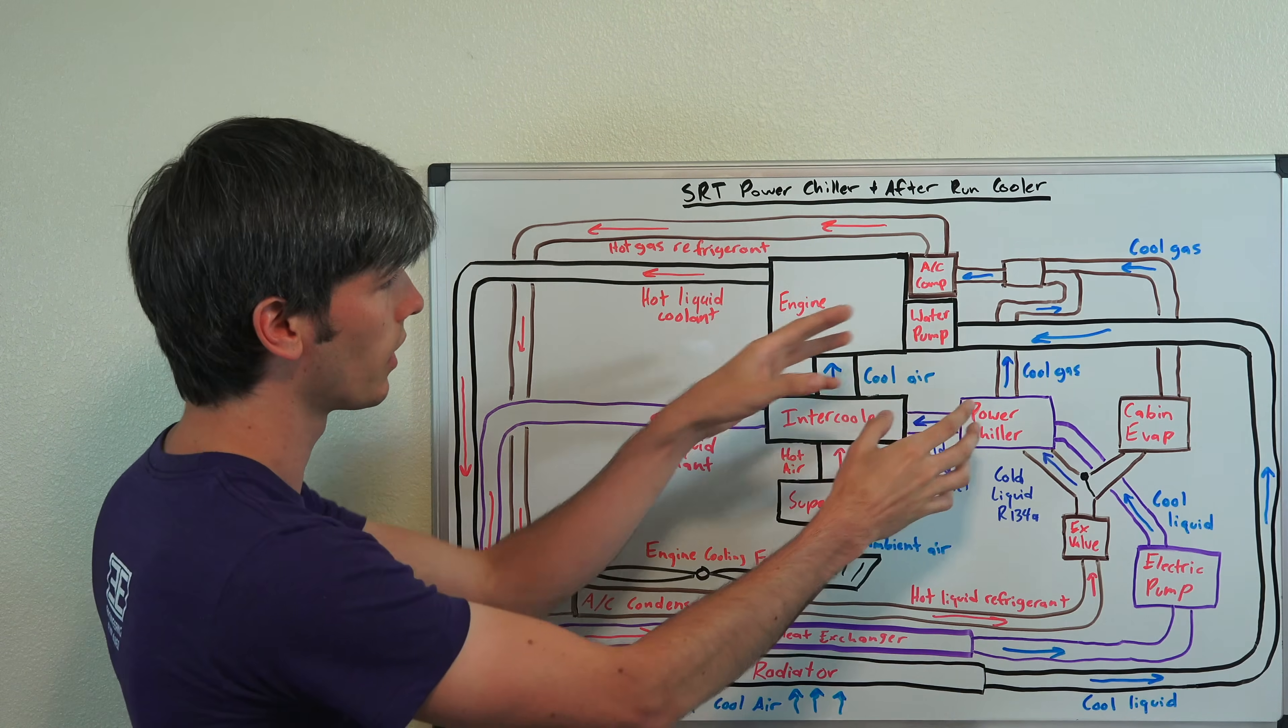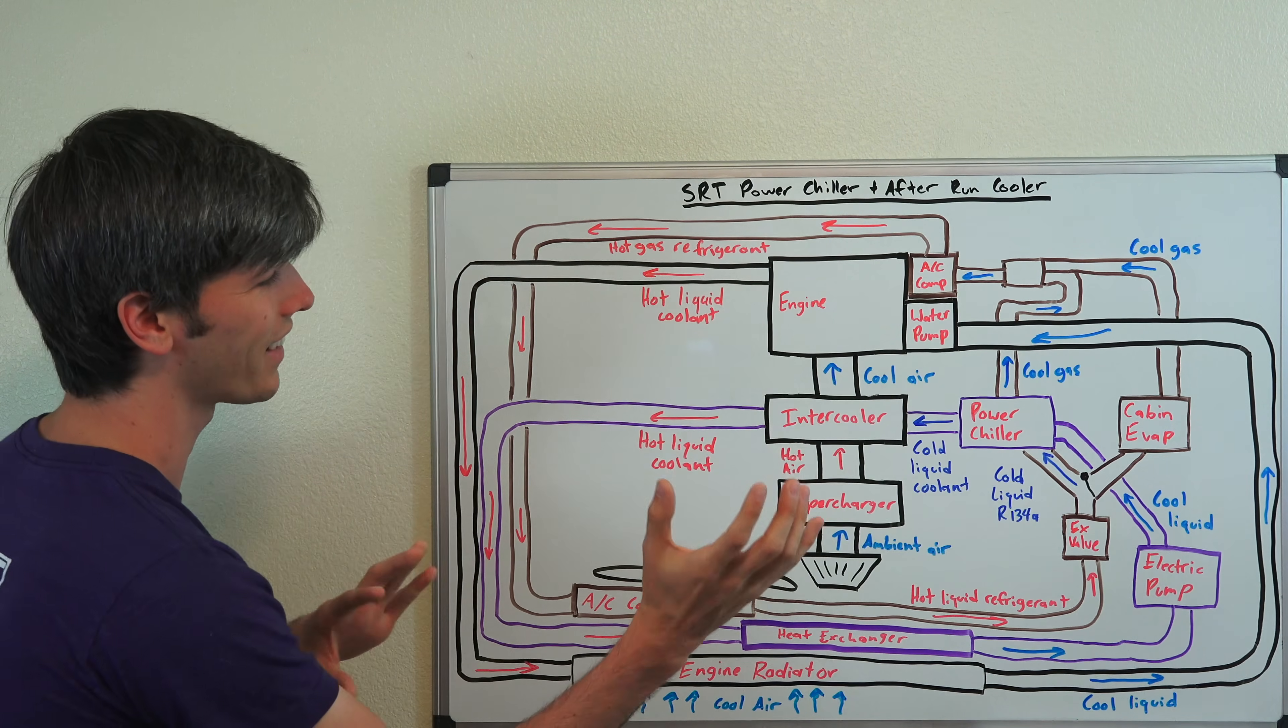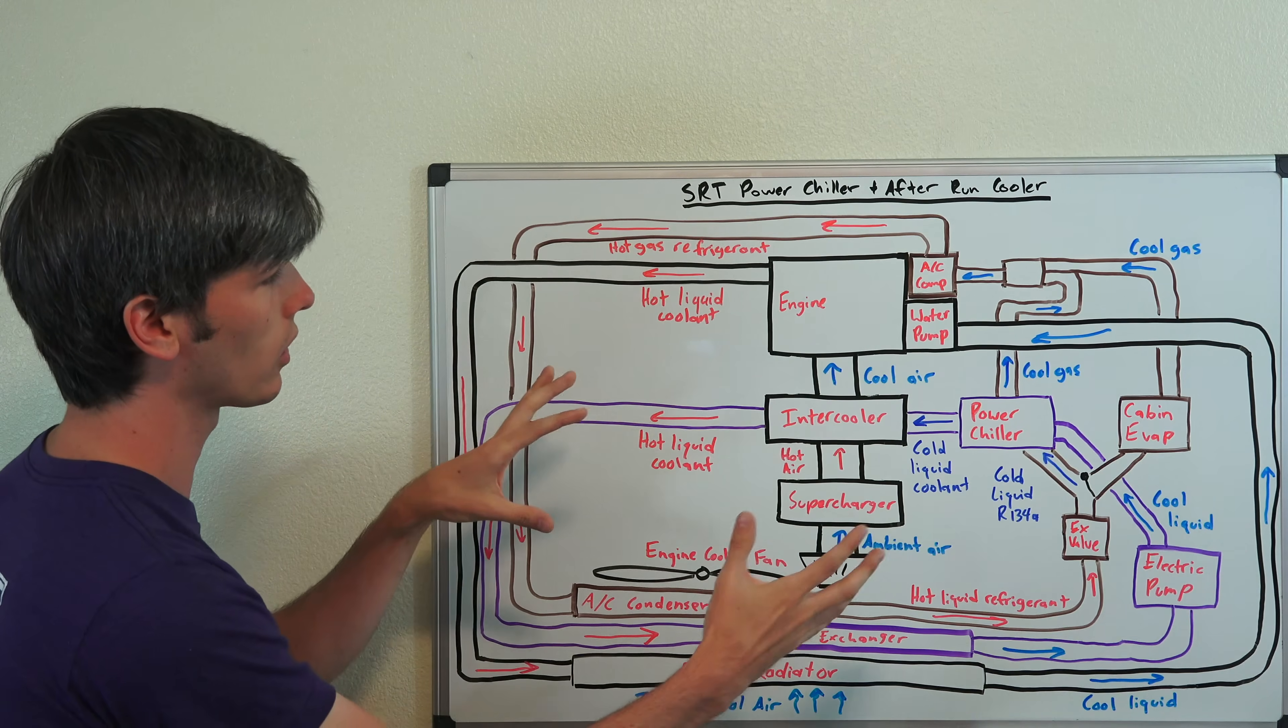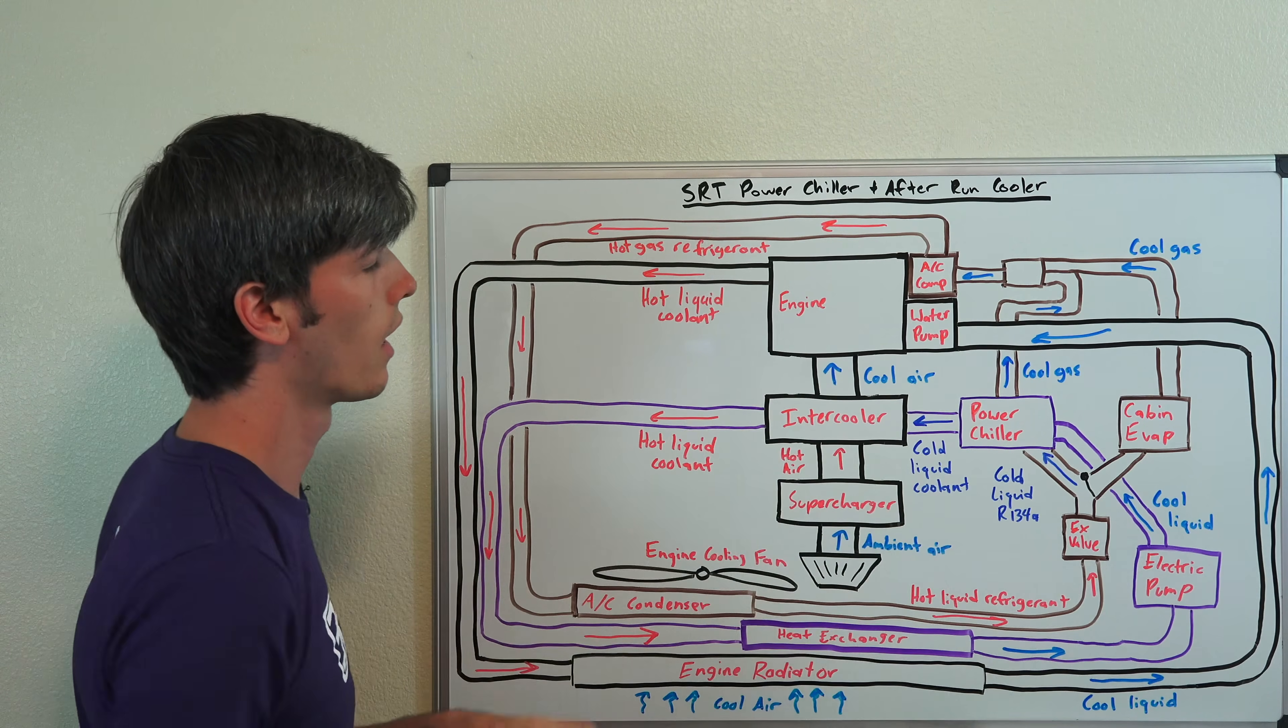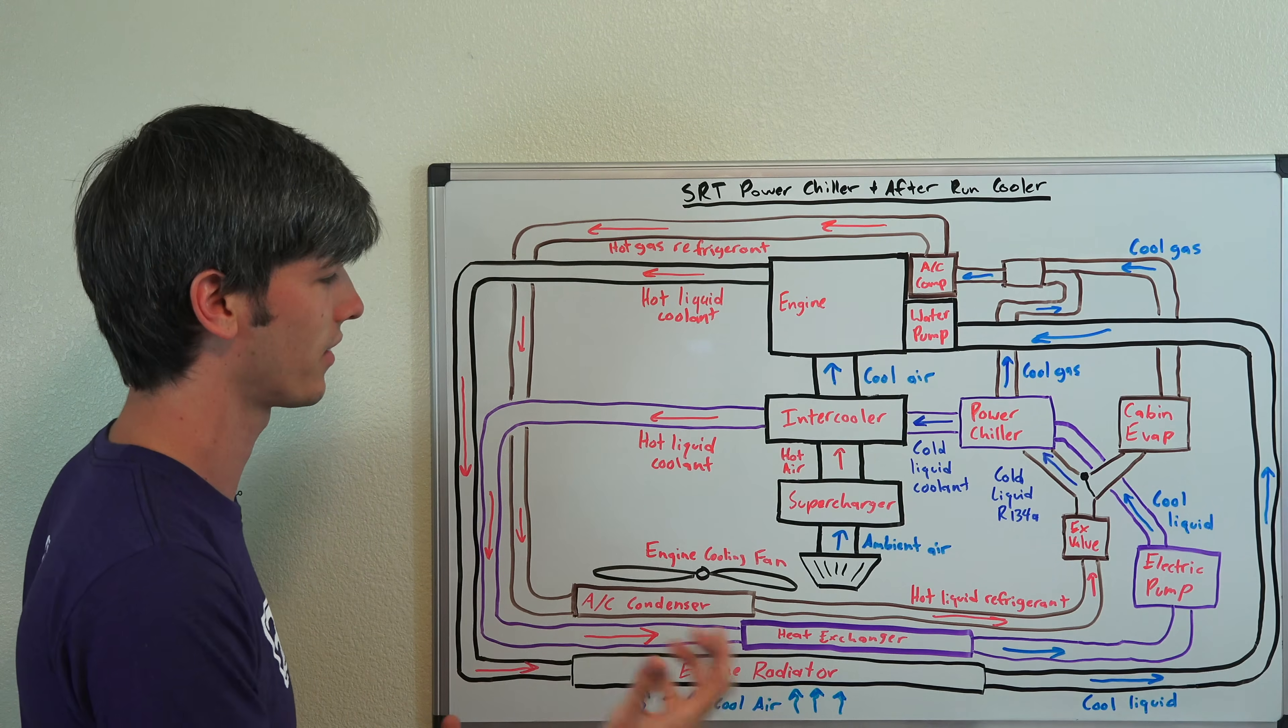And then the air conditioning system is in brown. And this isn't an exact replica of what's going on in the car, but it's close enough to where we can understand what's happening and how they're implementing this system.